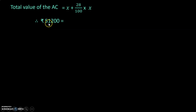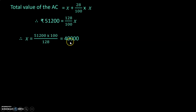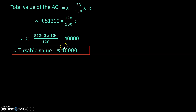We know the total value of the AC, so we write: 51,200 equals (128/100)x. Taking the LCM, 100x plus 28x gives 128x. On cross-multiplying: x equals 51,200 × 100 ÷ 128. Calculating, we get x equals 40,000. Therefore, the taxable value of the AC is ₹40,000.